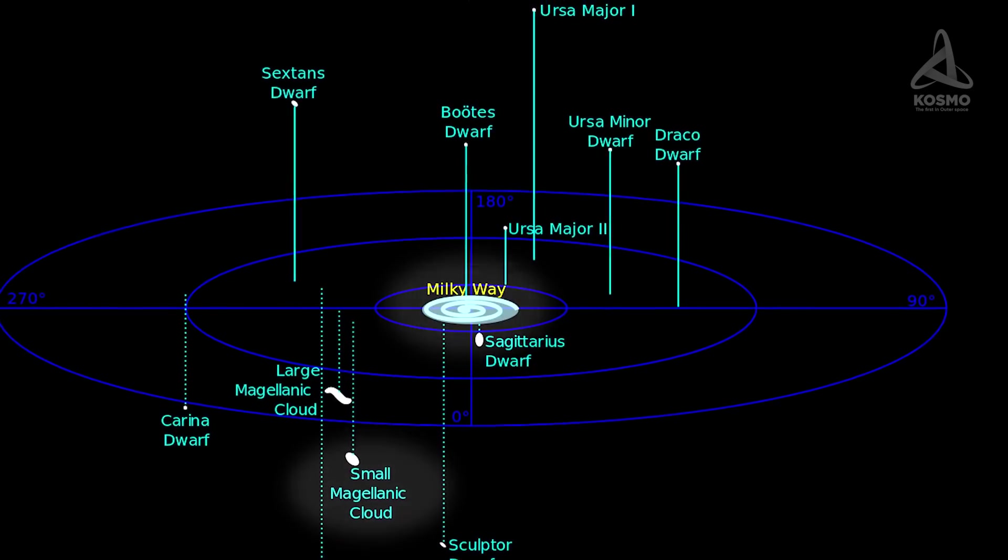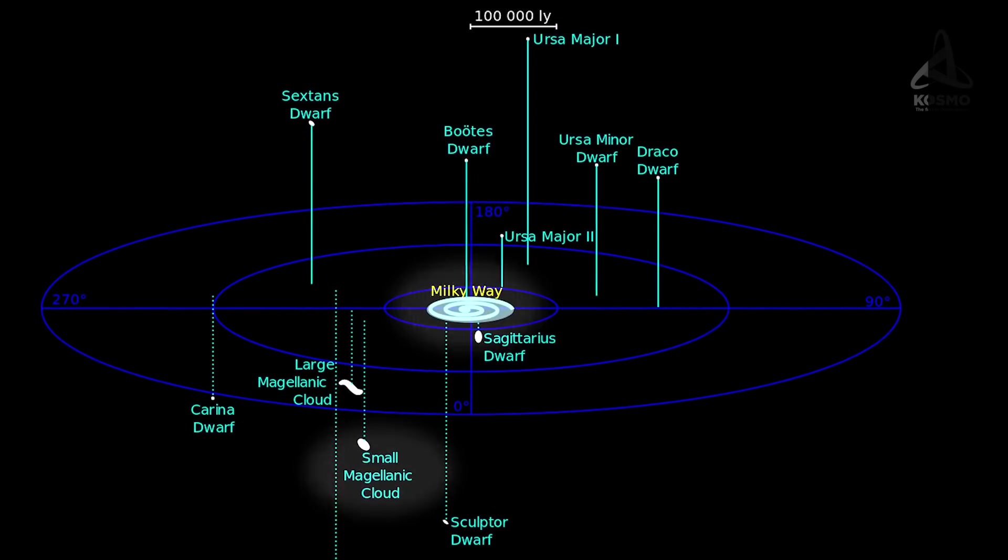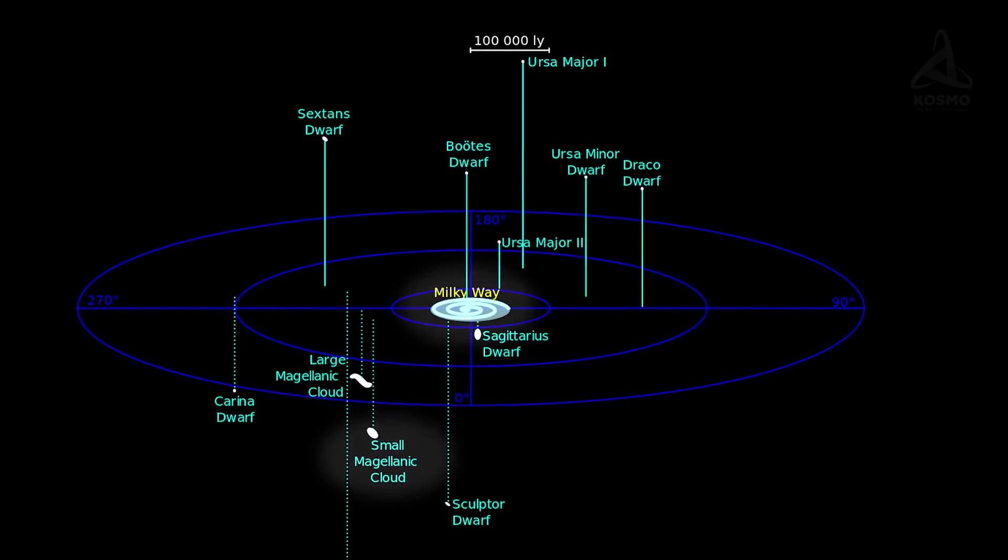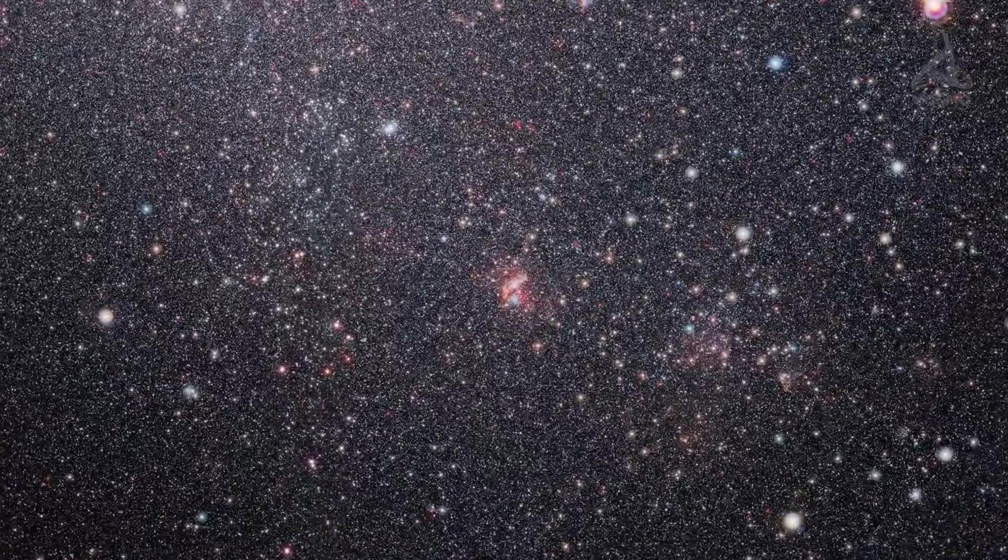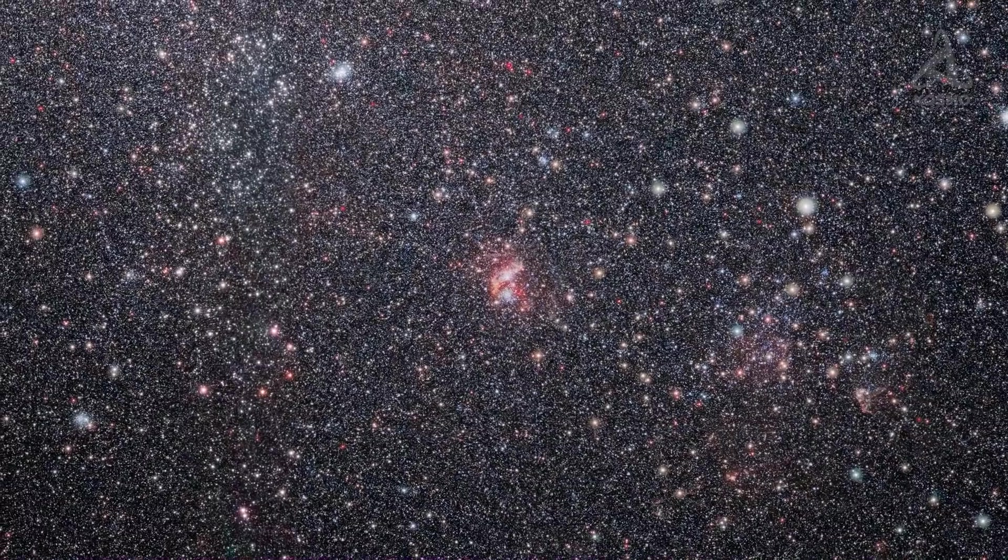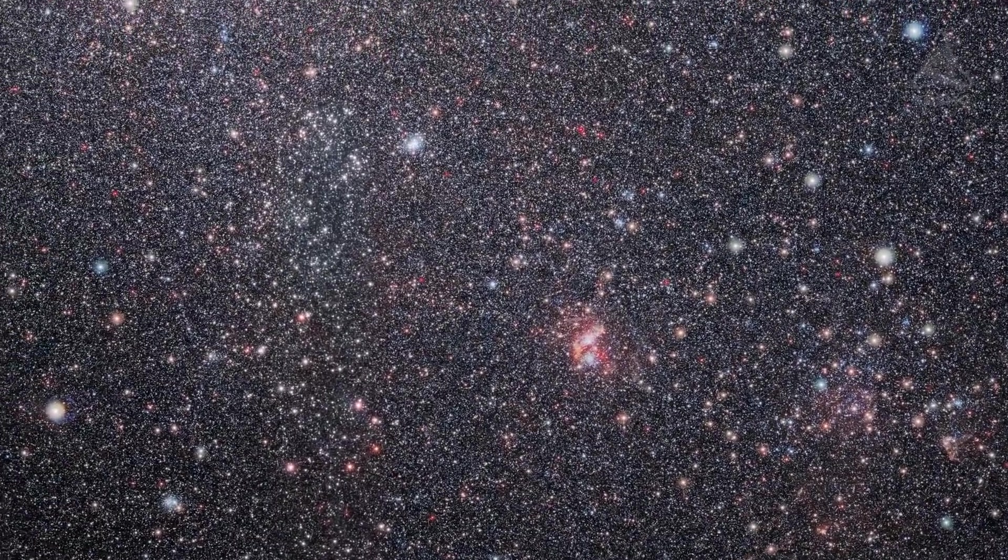It is located in the Toucanic constellation and has the appearance of a faint spot about 3 degrees in size. 1.5 billion stars are thought to be found in the small Magellanic Cloud.